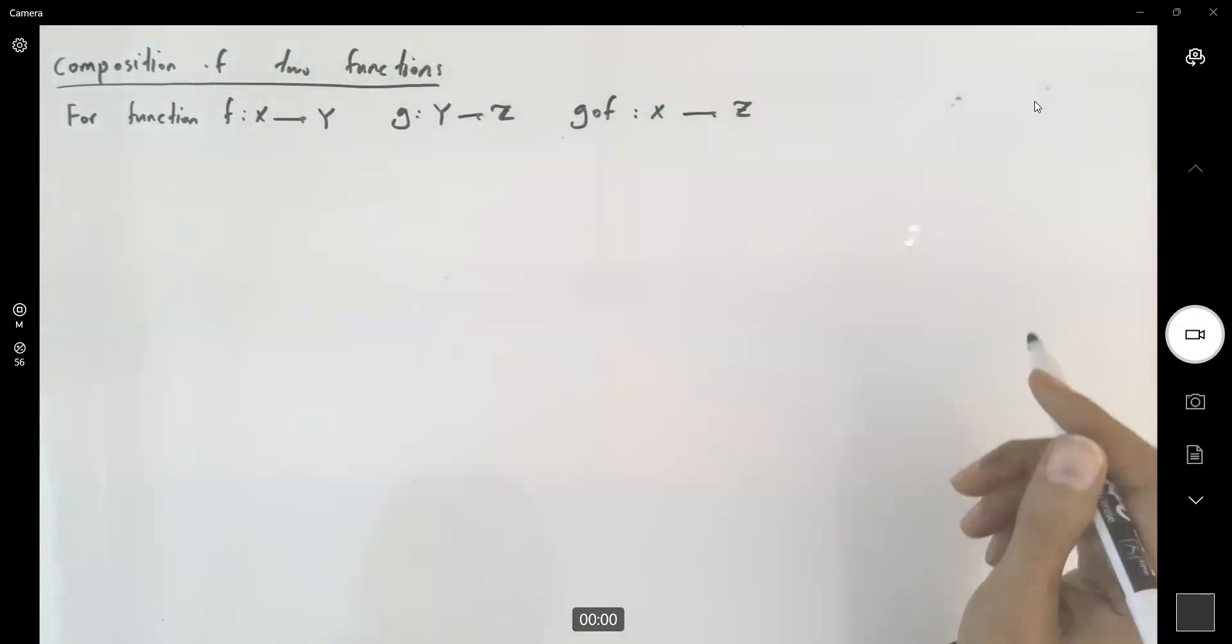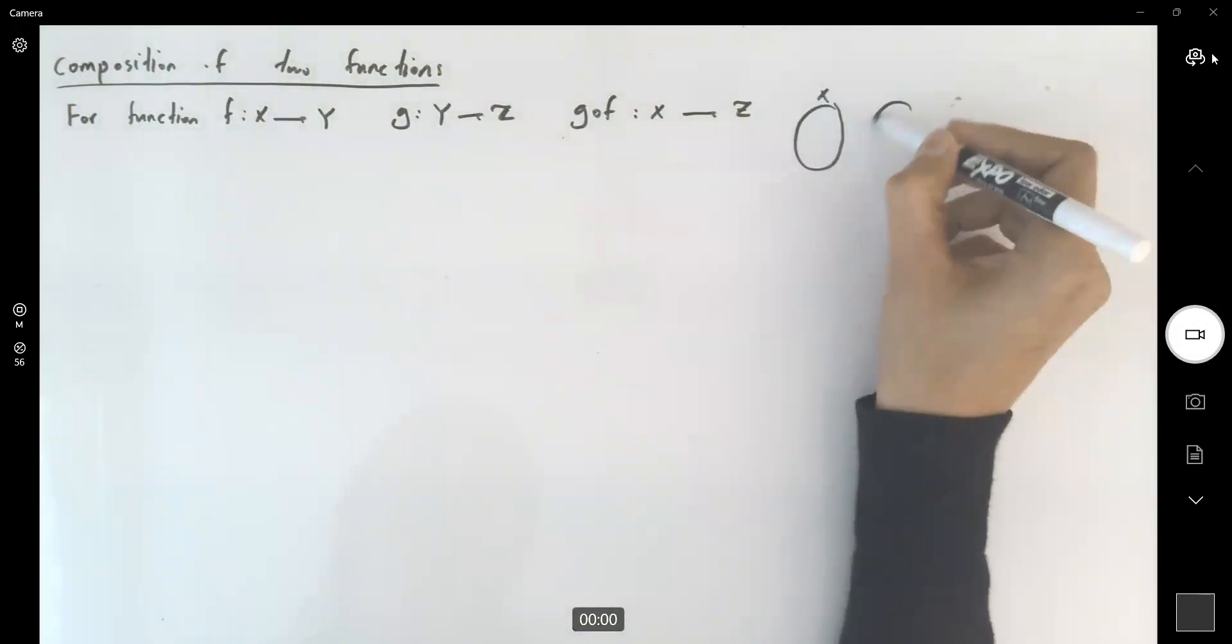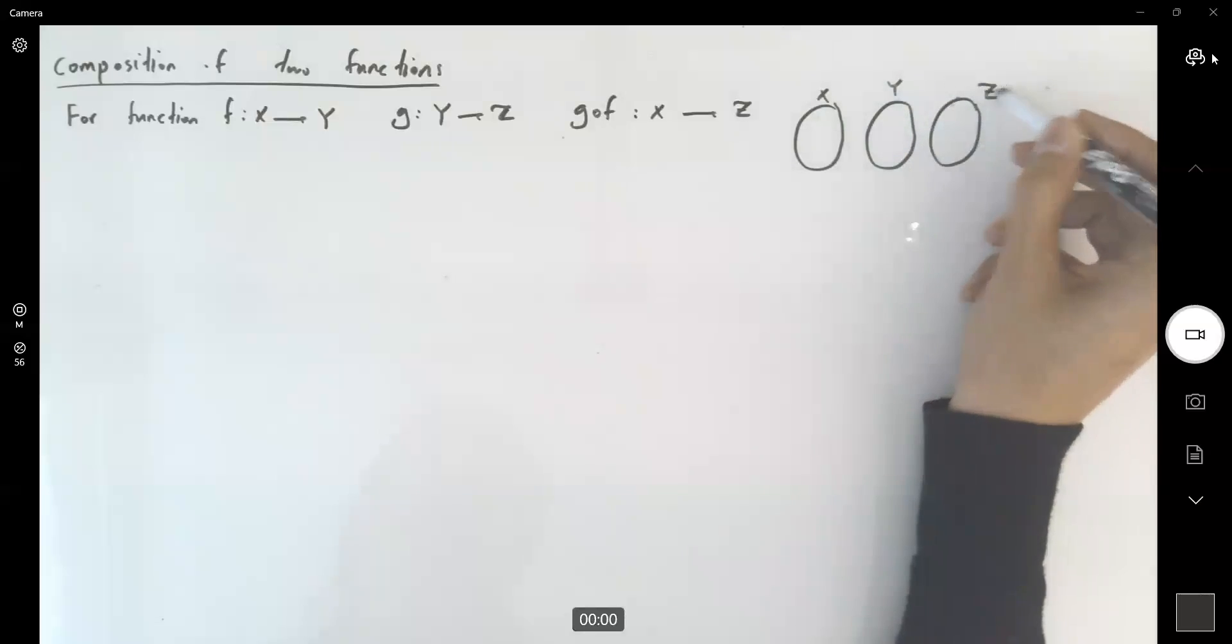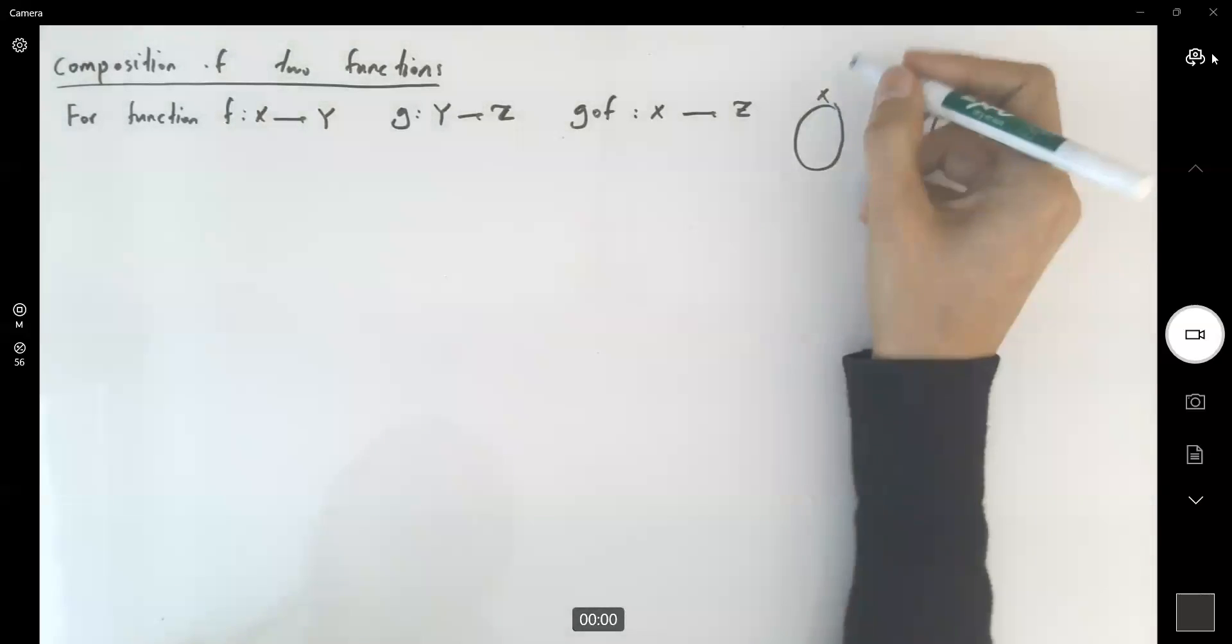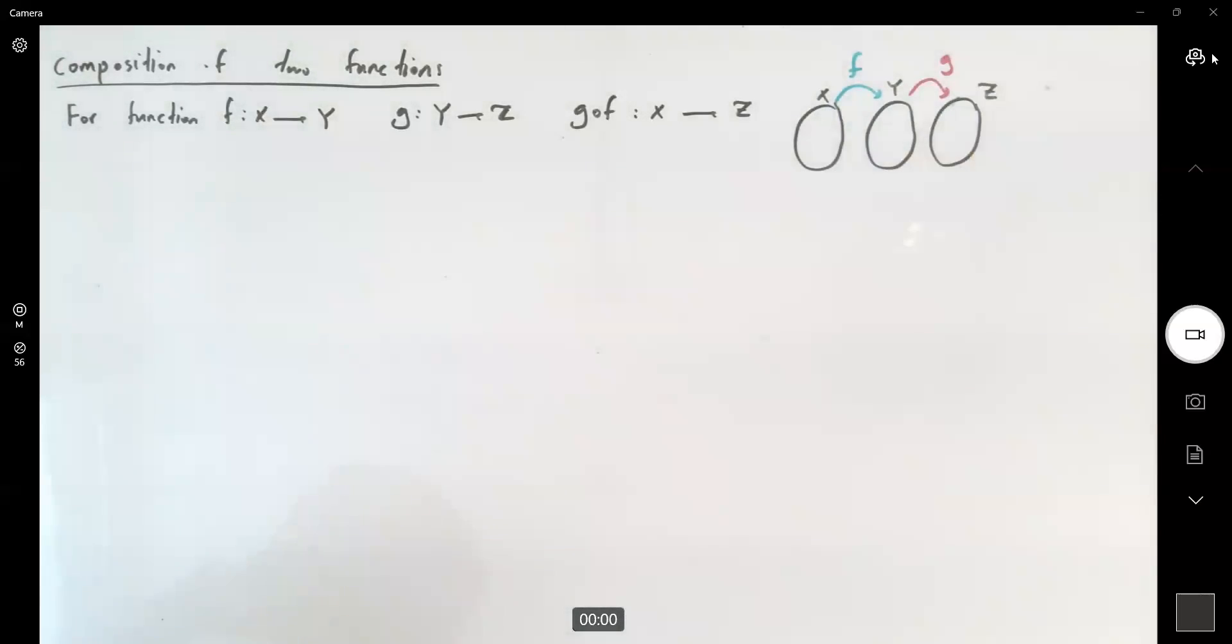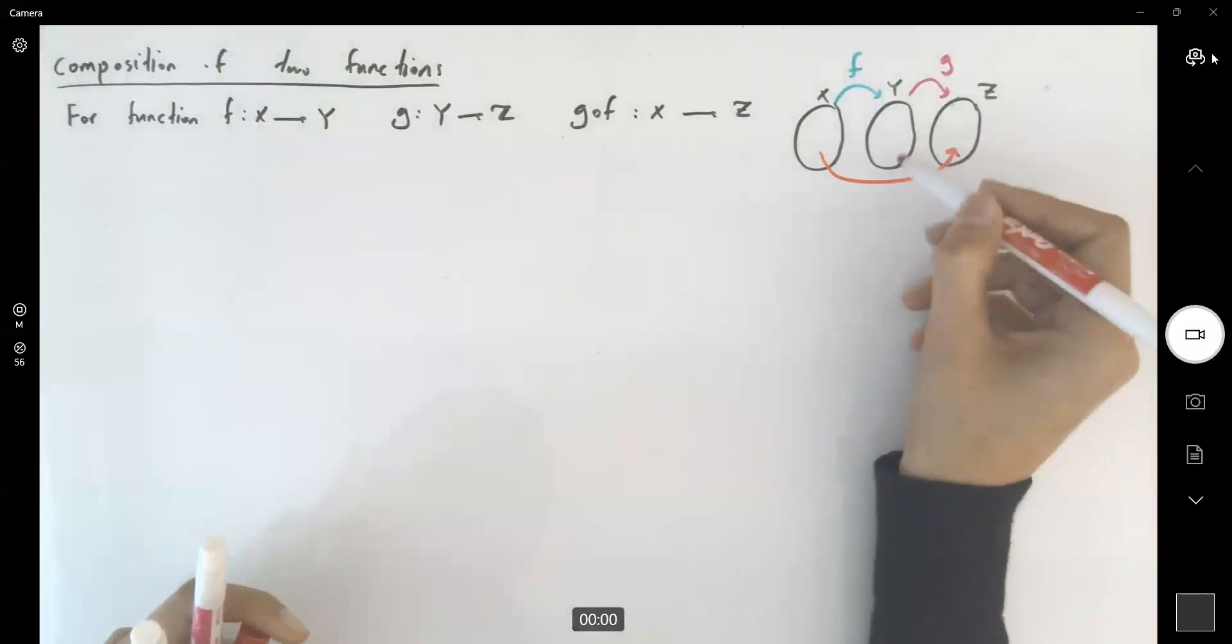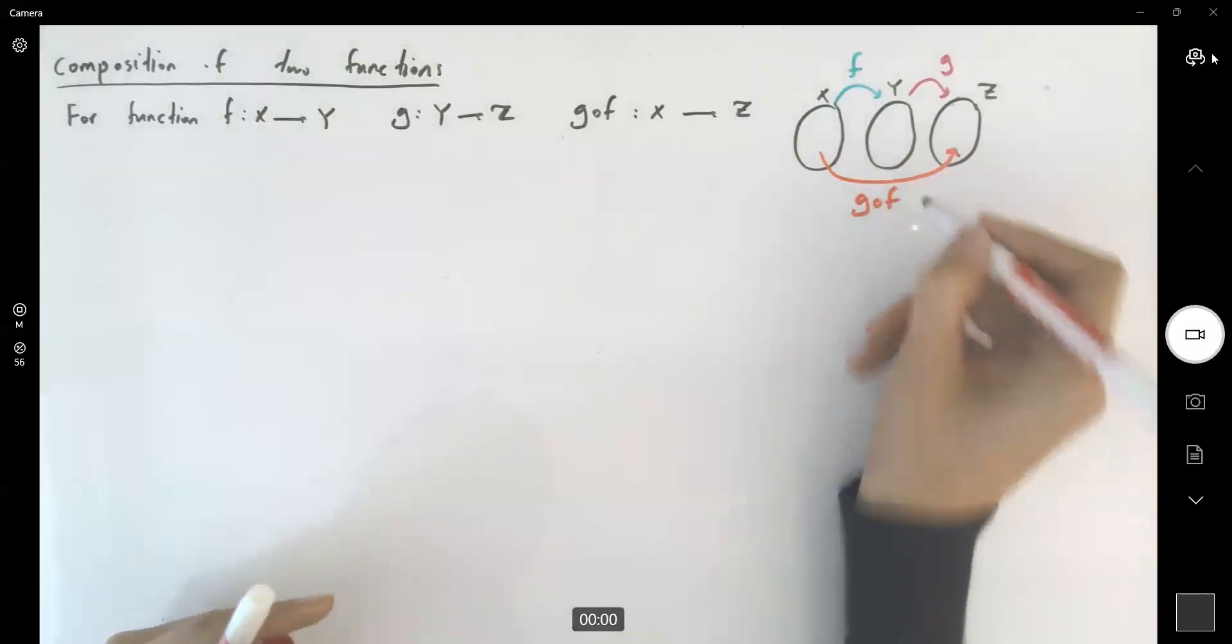Here you have your graph. x is mapped to y by f, and y is mapped to z by g, and then their composition maps the first set to the third set. So you have g of f.